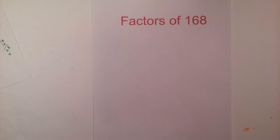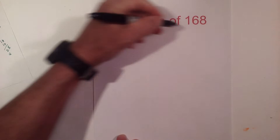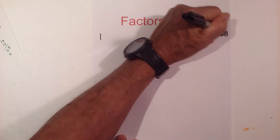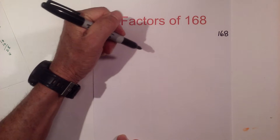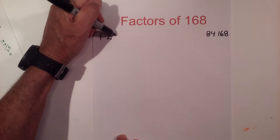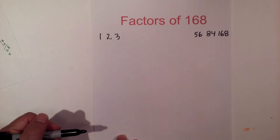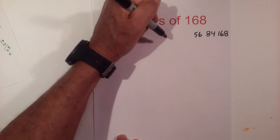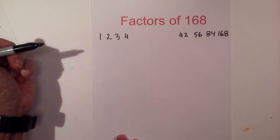In this video let's look at the factors of 168 and then the factors of 168 in pairs. It has quite a few factors, so we'll start with 1 times 168 and go from there. 2 goes into 168 84 times, then 3 goes into 168 times 56, then 4 goes into 168 times 42, and then 5 does not go in.